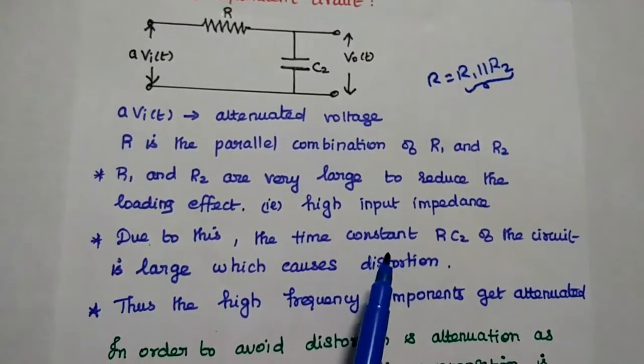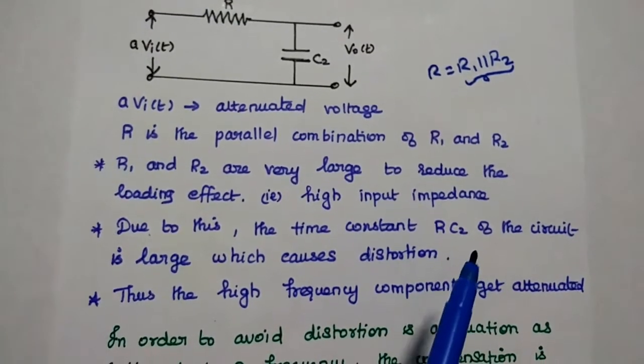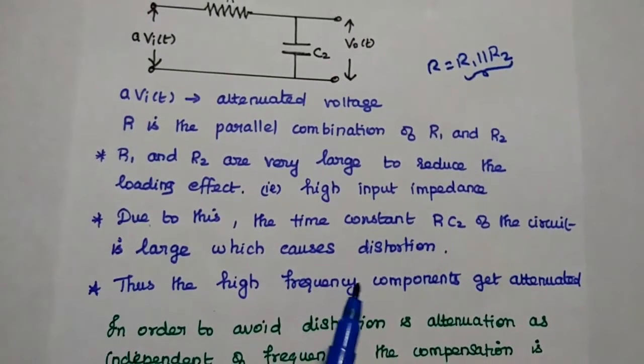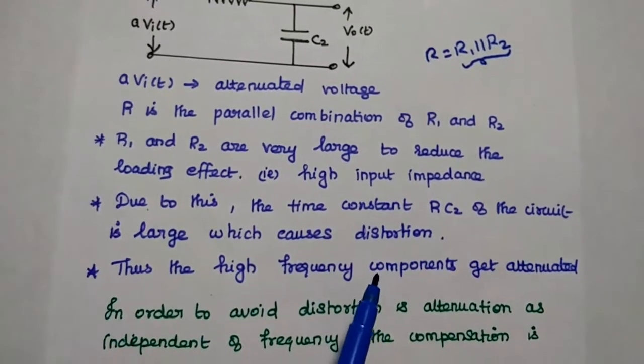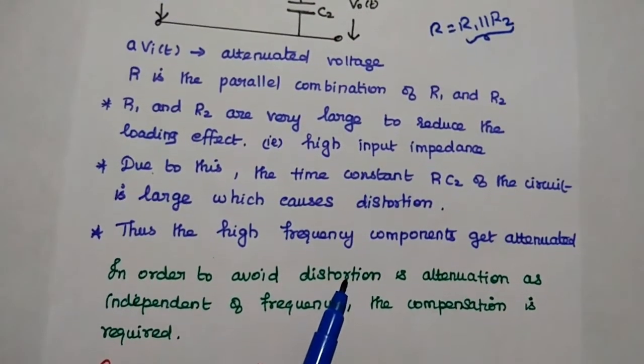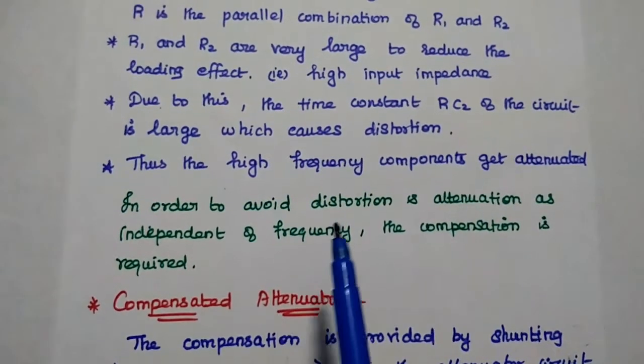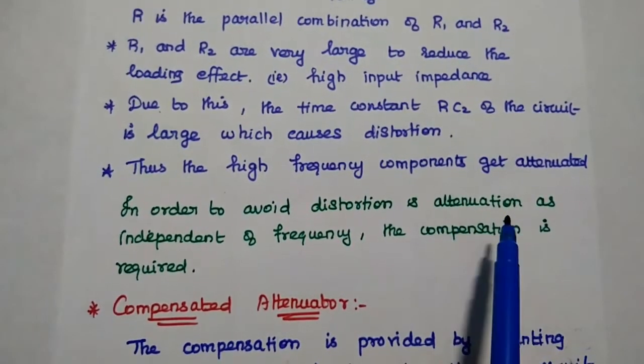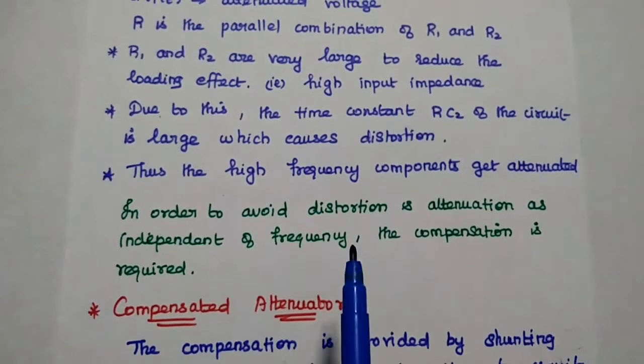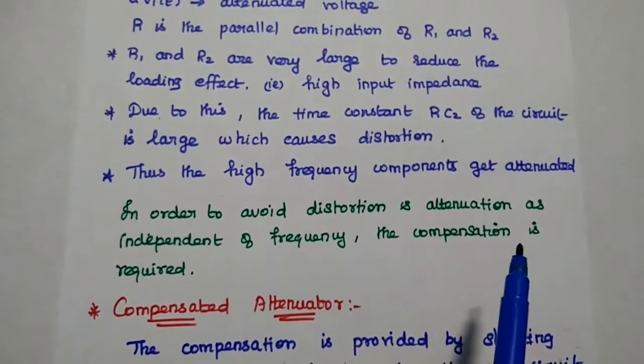Due to this, the time constant R into C2 is large enough which causes distortion. Then the high frequency components get attenuated. In order to avoid distortion and attenuation as independent of frequency, the compensation is required.